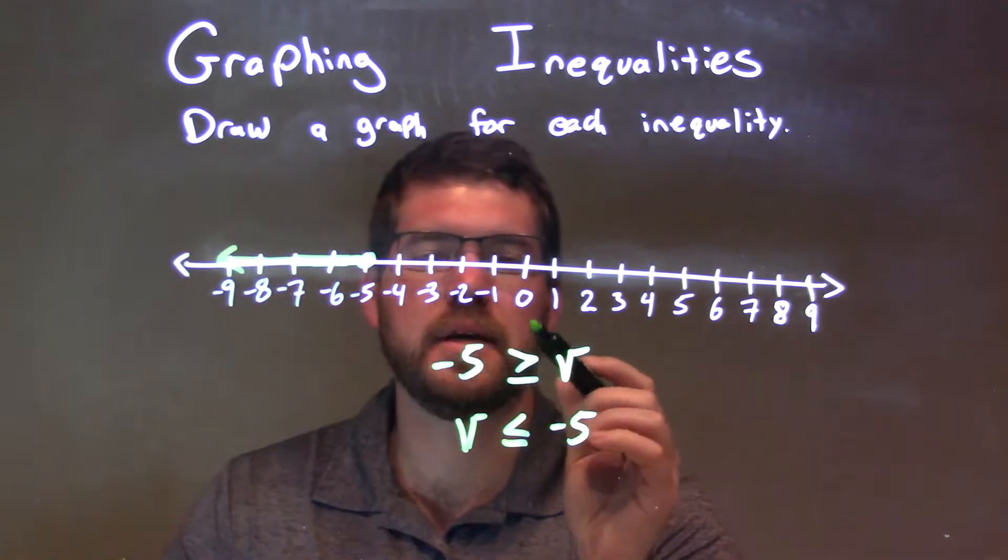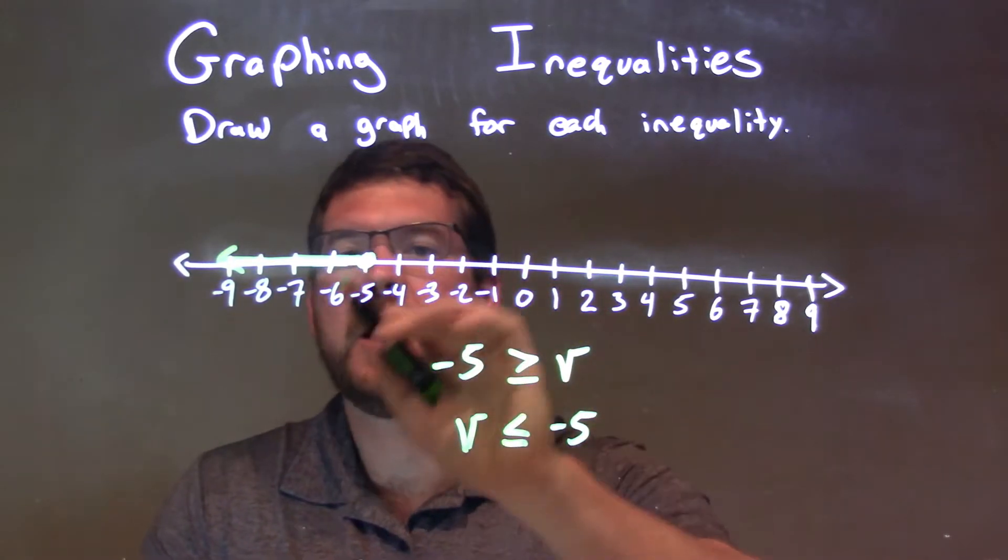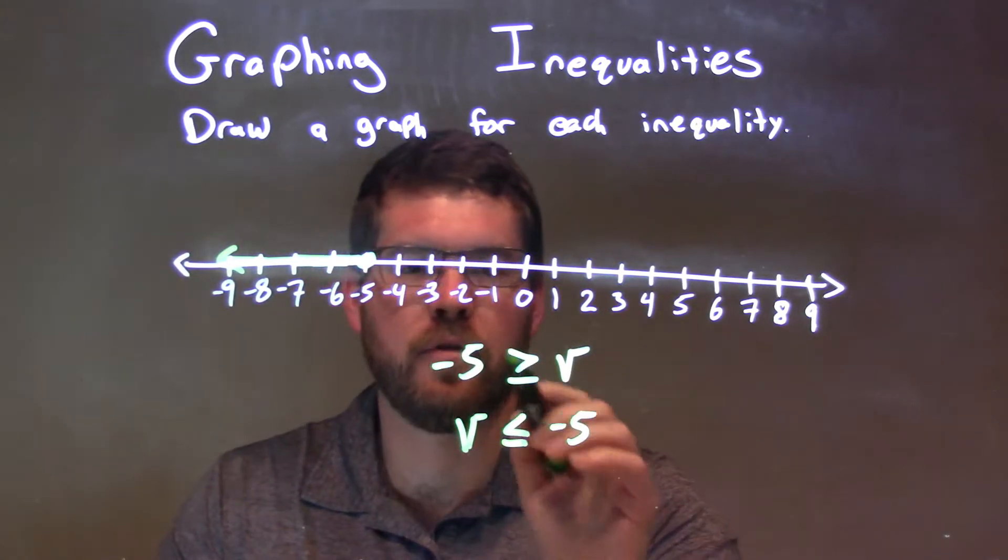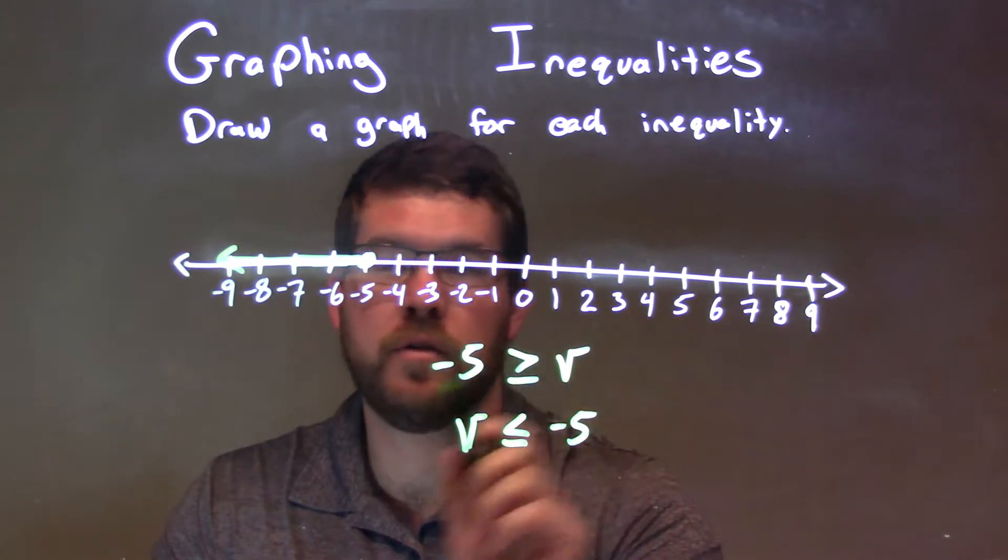Now, one thing we can see here, V is everywhere that we're shaded, where the line is. If you look at negative 5 can equal V, true, and negative 5 is greater than V.